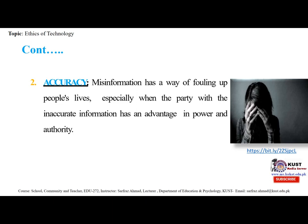Accuracy describes the difference between the measurement and the part's actual value, while precision describes the variations you see when you measure the same part repeatedly with the same device. According to ISO 5725-1, the general term accuracy is used to describe the closeness of a measurement to the true value. When applied to sets of measurements of the same measurand, it involves a component of random error and a component of systematic error. Misinformation can ruin people's lives, especially when the party with inaccurate information has an advantage in power and authority.